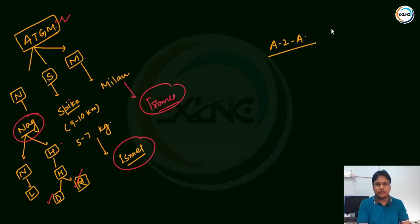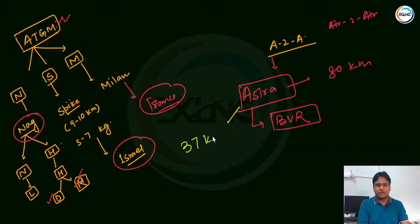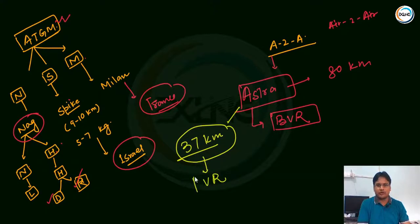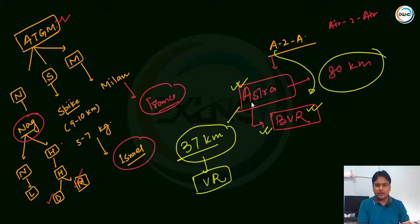In air-to-air missile systems, the important class is called Astra. Astra's range is up to 80 km. It is also called BVR - Beyond Visual Range. Visual range is up to 37 km; anything beyond that (up to 80 km) is beyond visual range. Astra is a system with beyond visual range capability. This makes it a very significant air-to-air missile in India's arsenal.